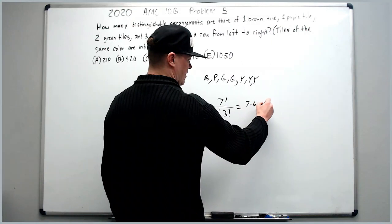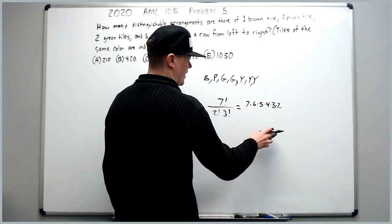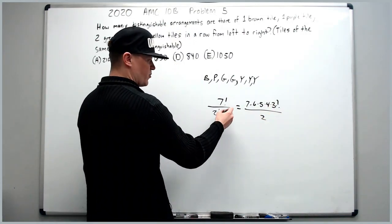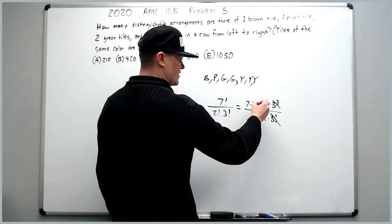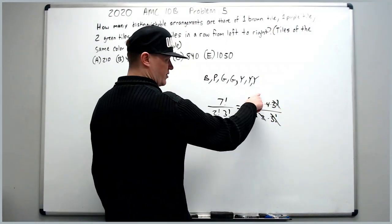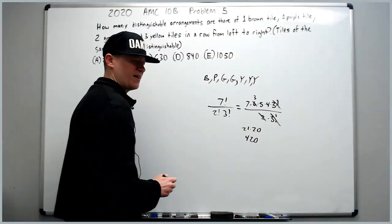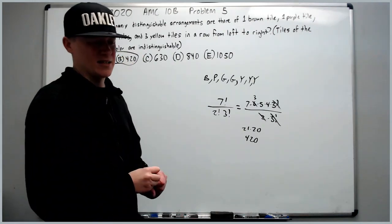This is seven times six times five times four times three times two. Whatever, times three factorial over two. The three factorials can cancel, and then the two can go into the six and make a three. You'll get 21 times 20, which happens to be a seemingly favorite number of test makers, because I've seen it on about six tests, 420.